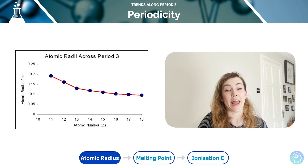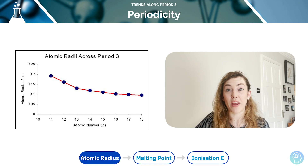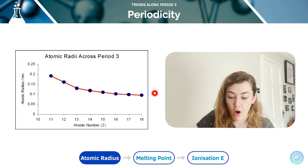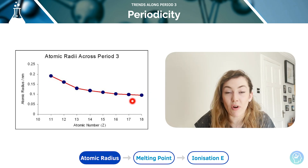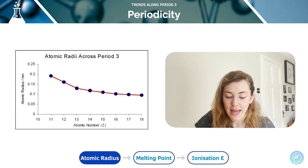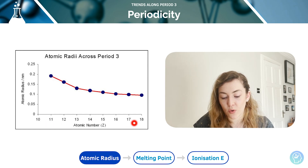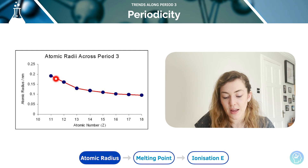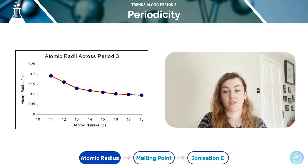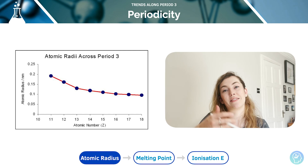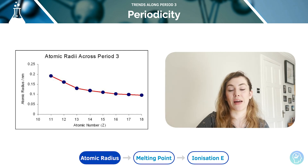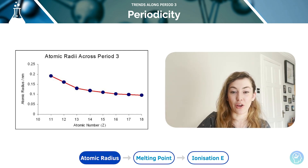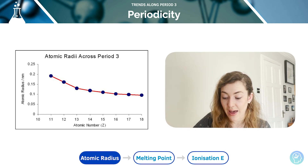We can look at that in period 3 as well and see the trend of atomic radii across period 3 on a graph. It is decreasing as we move along — as the atomic number and positive charge of the nucleus increases, the radius decreases as a result of the nucleus becoming more positively charged, and therefore the attraction between the outermost electrons and the centre increasing, because there's no shielding effect.